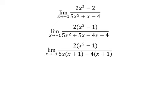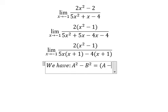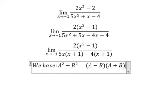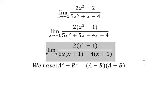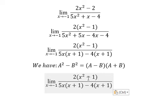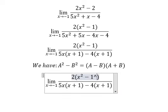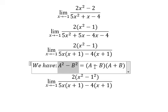Next we have the formula here. We have A² - B² = (A - B)(A + B). For the numerator, that is 2(x² - 1), so we need to transform this into this form.